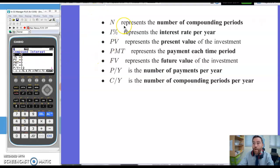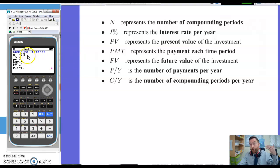N is the number of compounding periods. So if we were dealing with monthly compounding for two years, for example, that would mean we would have 24 compounding periods because you'd have 12 times 2. I% is the interest rate, so whatever your interest rate is you pop that in there.